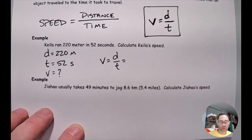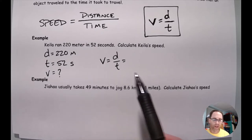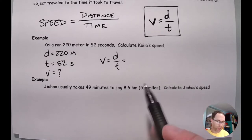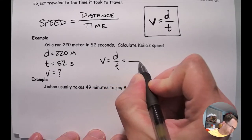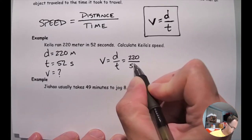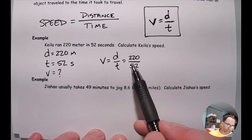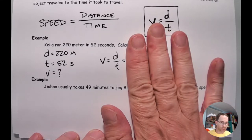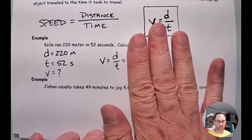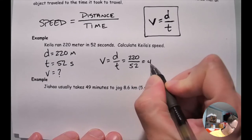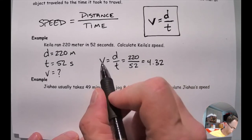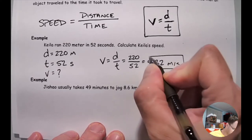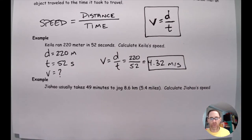I'll set this up and plug the numbers in. You can work left to right or top to bottom — I personally tend to work along the fraction. The reason we wrote the list of givens was so we don't flip these numbers and lose credit. Once I've identified what was given and the correct equation, most of the work is done — that's the physics. Now it's just following through with the math. Plugging 220 over 52 into a calculator comes out to 4.32, and the units are meters per second because those were the original units.